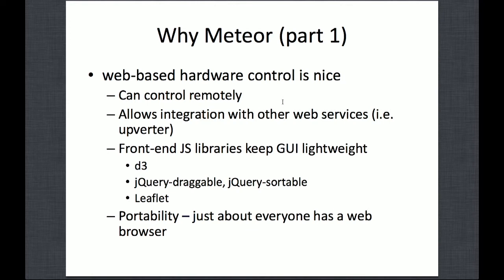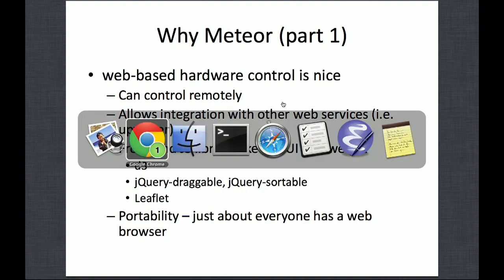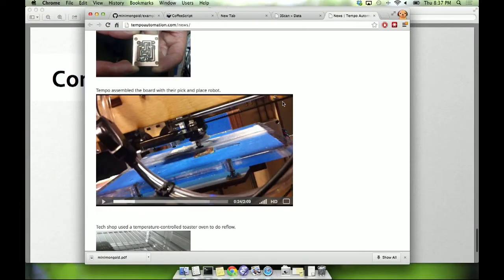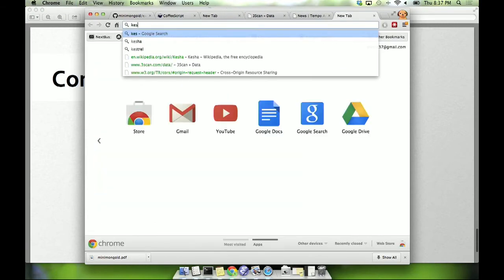So for the pick and place robot, there's a company called Upverter that's trying to be sort of like GitHub for hardware. And they actually have a button in their user interface so you can export data directly to the pick and place robot, use a upload form and submit data to the pick and place, hit go, and it just makes the part for you immediately.